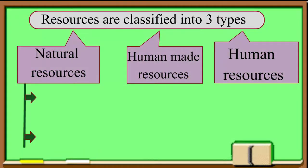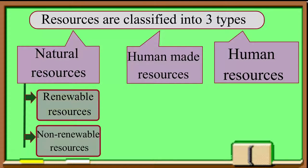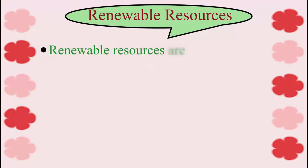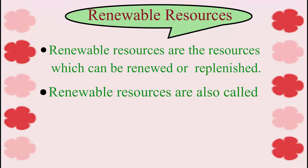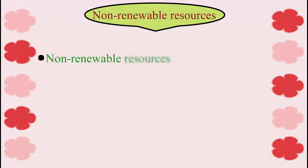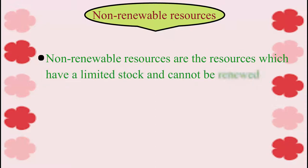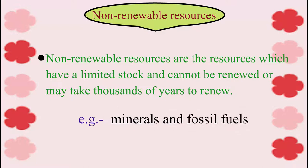Natural resources are of two types: renewable resources and non-renewable resources. Renewable resources are the resources which can be renewed or replenished; they are also called inexhaustible resources. Non-renewable resources are the resources which have a limited stock and cannot be renewed, or may take thousands of years to renew. For example, minerals and fossil fuels.